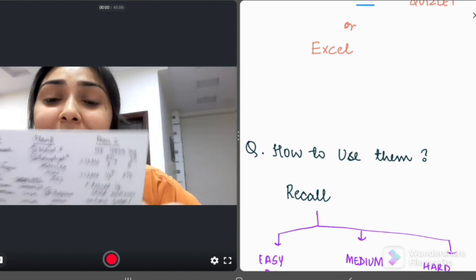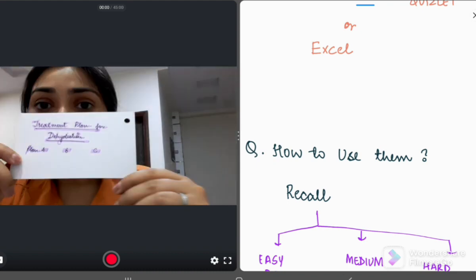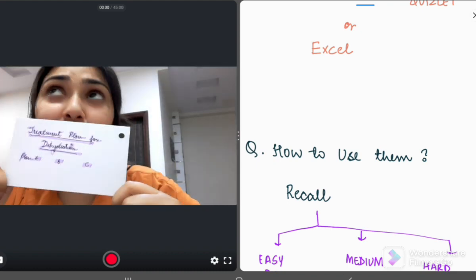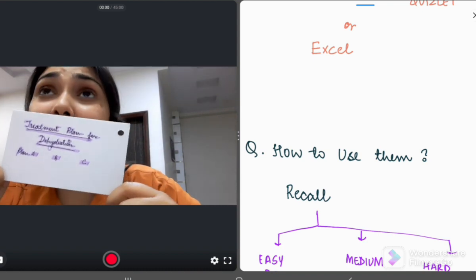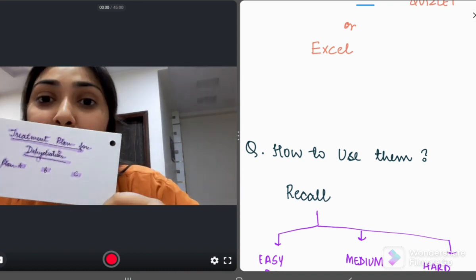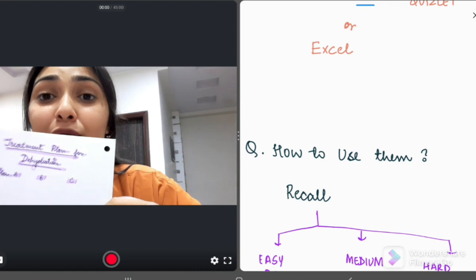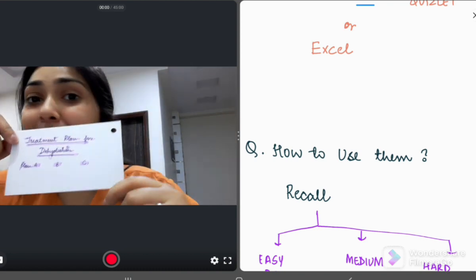So how to use them? Use them to recall. See one side of the flashcard. You see treatment plan for dehydration, plan A, plan B, and plan C. And now try to recall, what is plan A, what is plan B, and what is plan C without turning to the backside.